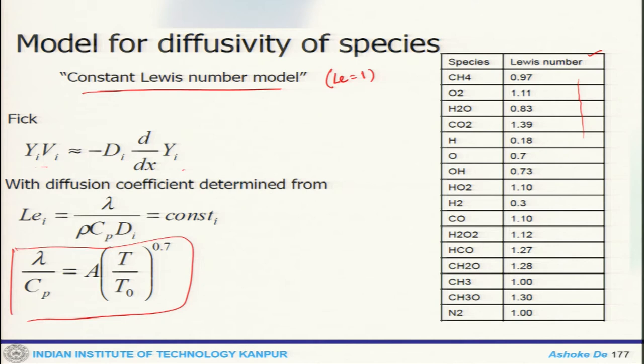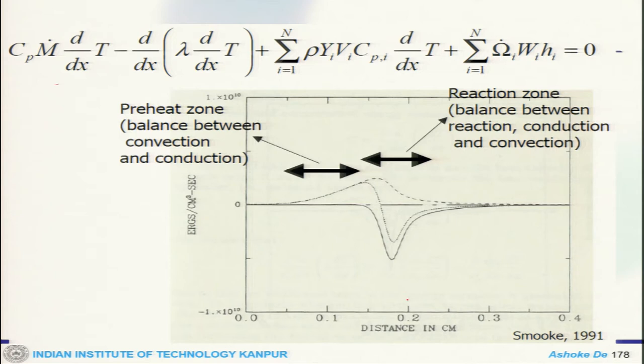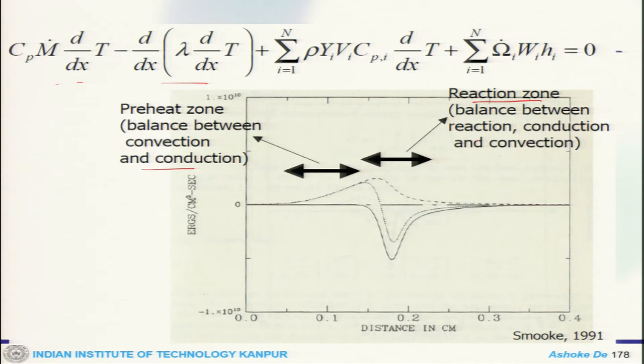We convert the temperature equation and we can see that if we plot these terms for different zones in the reaction zone, there is always a balance between convection and conduction. In the preheat zone and the reaction zone, this is a balance between reaction, conduction, and convection. These are the different terms you can plot and see how they actually vary from one zone to another zone.